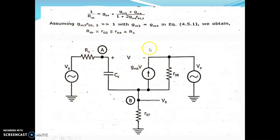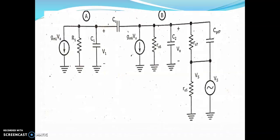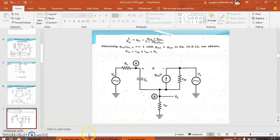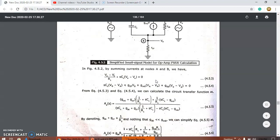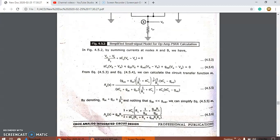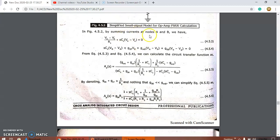The small signal model is replaced here. This is the Rth value, which is equal to R1, and this is the AC source. We are taking 2 points, A and B. You are taking the summing current at node A and node B.